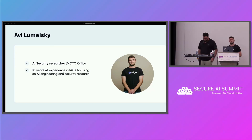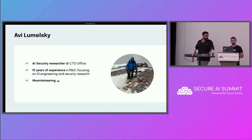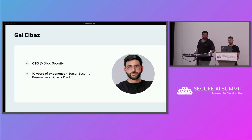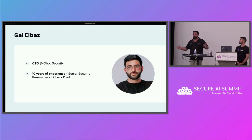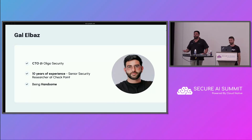I'm Avi Lomelski, an AI security researcher in the CTO office of Oligo. I have around 10 years of experience in AI engineering and focusing on security research these days. On my spare time I love to climb mountains. And with me is Gal, my awesome CTO. I'm Gal, co-founder and CTO of Oligo. Prior to Oligo, I was leading the research group of Checkpoint, basically hacking the biggest applications in the world and presenting at Black Hat, DefCon, this type of conferences. I'm super famous for being handsome because I cannot climb mountains.